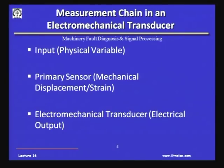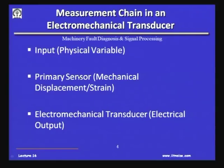Going back to the pressure gauge example, the measurement chain in an electromechanical transducer has three elements. First, the physical variable — load/force in the case of a load cell, or pressure in the case of a pressure gauge. Second, the primary sensor — that mechanical displacement or strain, like the membrane which deflected with a strain gauge on it. Third, the output which corresponds to the characteristic of the sensing element. Everything put together is an electromechanical transducer, which is a superset of the sensing element.